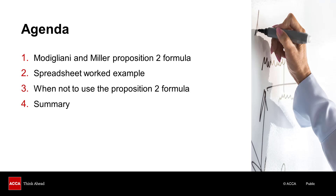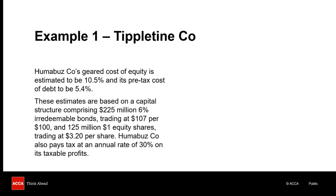To achieve that aim, we will review a worked example based on a past exam question. I have copied the relevant information from a past exam question — this was a question which expected candidates to estimate the cost of equity for a company called Tipleton Co. The reason a proxy company is used is because it is exposed to the same business risk as Tipleton Co's new investment.